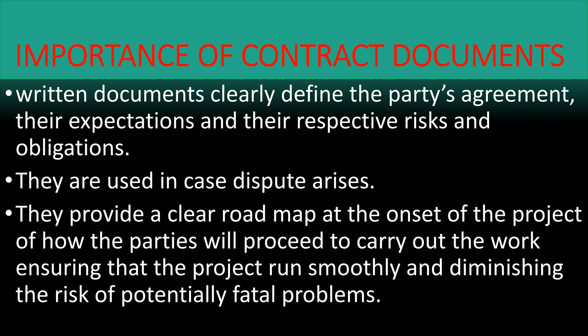Number three: they provide a clear roadmap at the onset of the project of how the parties will proceed to carry out the work, which helps to ensure that the project runs smoothly and diminishes the risk of potentially fatal problems. The roadmap is set by the drawings, the specification — everything is set clearly so that we can avoid issues when the contract has been awarded and construction has begun. Someone may say they did not specify that type of tile or the exact ratio of concrete — so these contract documents help to reduce potential problems before the project begins.